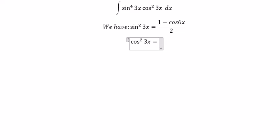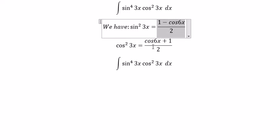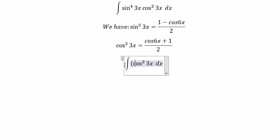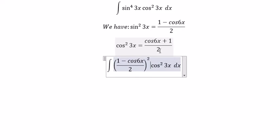so you got about (cos6x + 1)/2. So we put this one in here and this one in here.